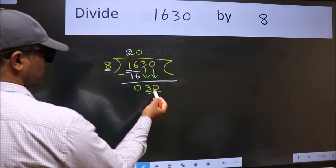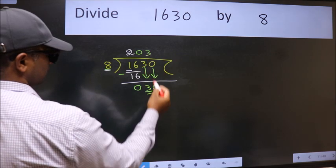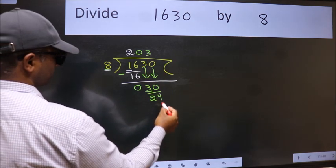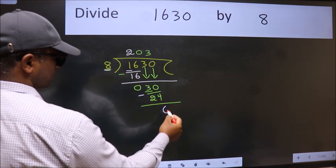So 30. A number close to 30 in the 8 table is 8 threes, 24. Now we subtract. We get 6.